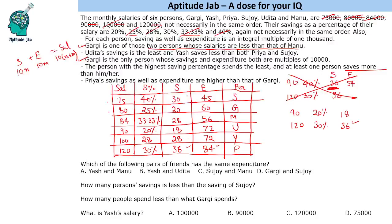Now answering the questions: Which pair has the same expenditure? Yesh and Udita both have expenditure of 72,000. How many persons save less than Sujoy? Sujoy saves 30,000, and four people save less. How many people spend less than Gargi? Gargi spends 60,000, and two people spend less. What is Yesh's salary? Yesh's salary is one lakh (100,000). That completes the solution to the set.